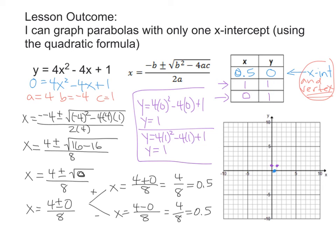Because I chose x = 0 and x = 1, they're both a half a unit away from our vertex at 0.5. They're an equal distance from the vertex, which means their y-values will be the same for a symmetric parabola. So we go up and through like so on both sides — and there is our parabola. Use the quadratic formula to find your x-intercepts; if there's only one, it's also your vertex. Then simply choose an x-value to the right and one to the left, find the corresponding y-values, and graph your parabola.